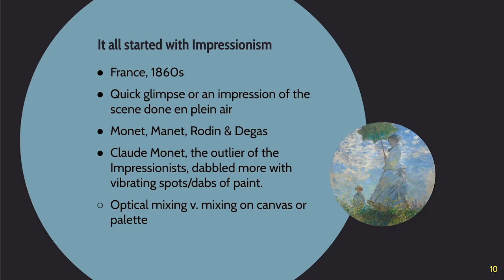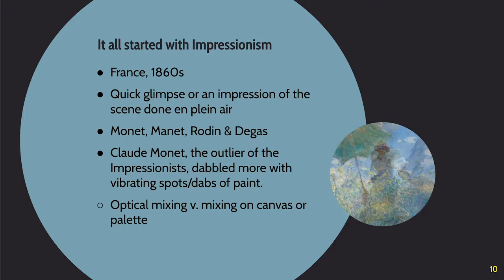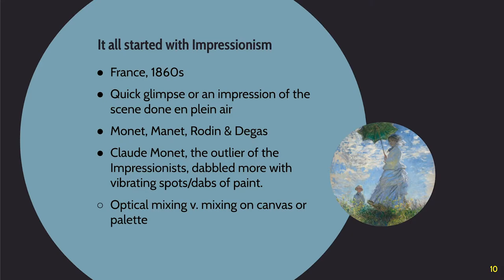So let's start with impressionism first. We're in France, 1860s. The Salon is in full force. Monet, Manet, Rodin, and Degas are the big players. They chose to get a quick glimpse, or an impression, of the scene. They did a lot of their painting en plein air, which means outside. Claude Monet would dab paint on the canvas, and instead of mixing on the canvas or palette, he left it to your eyes to see the colors mix when you stepped back from the painting.